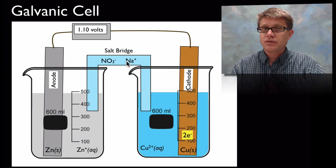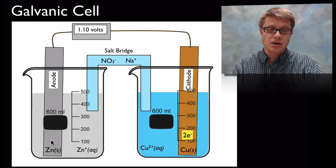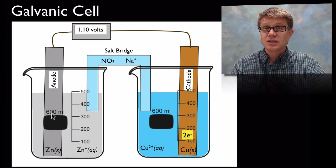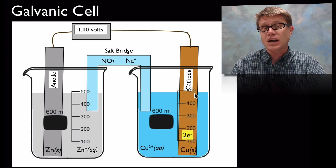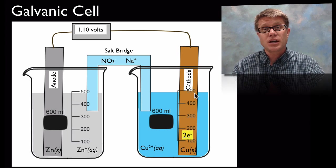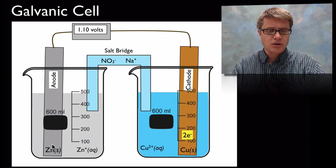So once we've added the salt bridge this thing is going to turn on. And electrons are going to flow from the anode to the cathode. In other words the electrons that are being lost in this zinc metal as the zinc becomes a zinc ion are going to travel through the wire to the cathode where they're going to actually pick up those electrons.